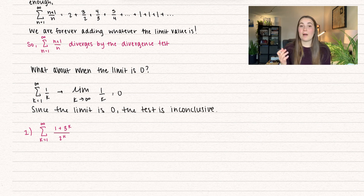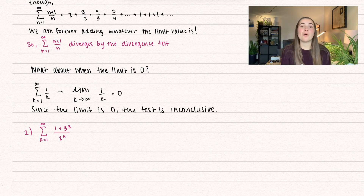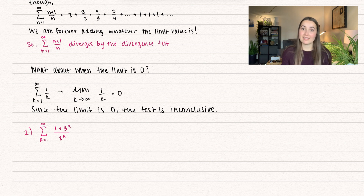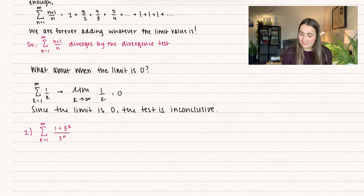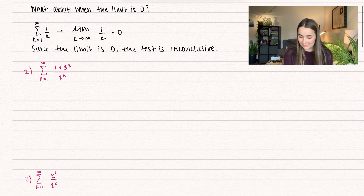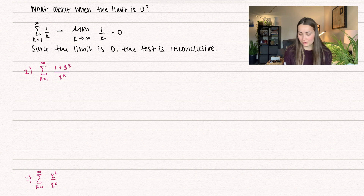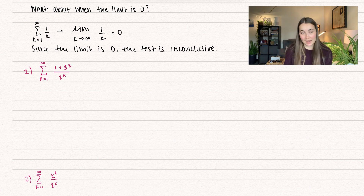By the name "divergence test," it only tells us if a series diverges; otherwise it's inconclusive. Let's go through some examples. Here we have the summation from k equals 1 to infinity of 1 plus 3 to the power of k, divided by 2 to the power of k.